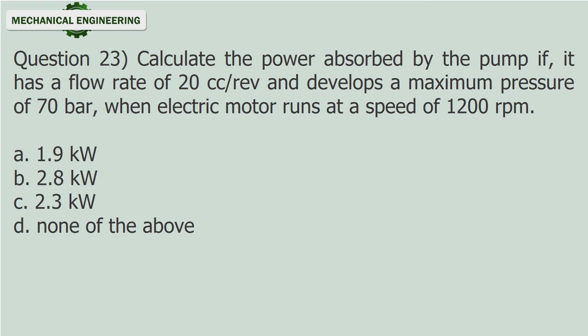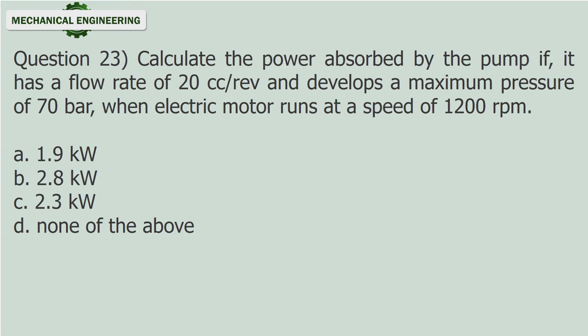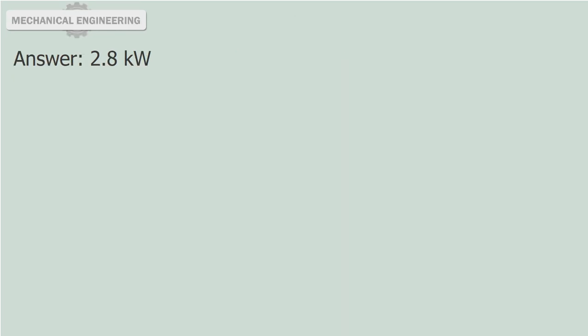Question 23: Calculate the power absorbed by the pump if it has a flow rate of 20 cc/rev and develops a maximum pressure of 70 bar when the electric motor runs at a speed of 1200 revolutions per minute. A. 1.9 kilowatts. B. 2.8 kilowatts. C. 2.3 kilowatts. D. None of the above. Answer: 2.8 kilowatts.